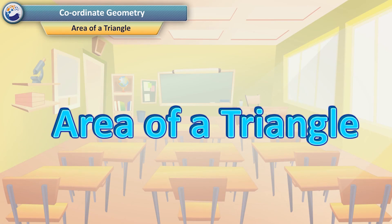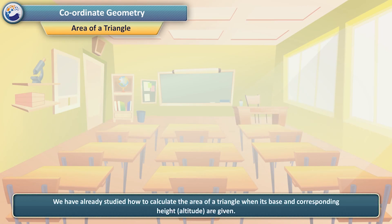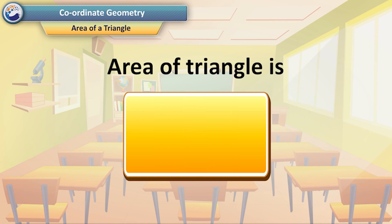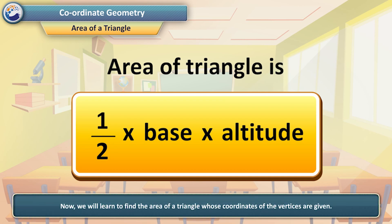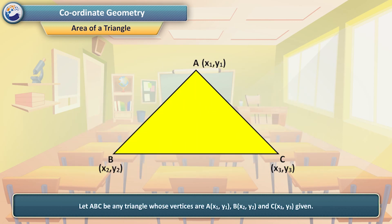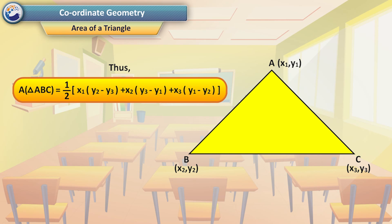Area of a Triangle. We have already studied how to calculate the area of a triangle when its base and corresponding altitude are given: Area = ½ × base × altitude. Now, we will learn to find the area of a triangle whose vertex coordinates are given. Let ABC be any triangle with vertices A(x₁, y₁), B(x₂, y₂), and C(x₃, y₃). Then, area of triangle ABC = ½ |x₁(y₂ − y₃) + x₂(y₃ − y₁) + x₃(y₁ − y₂)|.